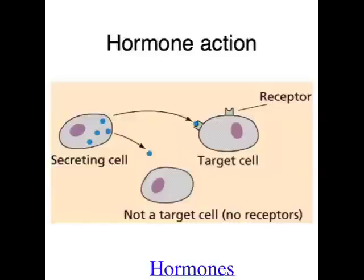In flowering plants, hormones actually control the growth of roots, the growth of stems and leaves, the timing of flowering, fruit ripening, and the timing of seed germination. So in reality, the whole organism's growth and development is controlled by hormones in plants.